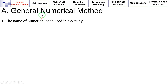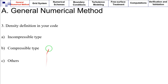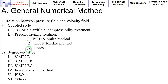General numerical method: What is the name of the numerical code used in the study? For example, Star-CCM+. What is the general classification by discretization scheme — FEM (finite element method), FDM (finite difference method), FVM (finite volume method), spectral method, vortex method, or others? You need to specify how the fluid density is treated in your code: is it incompressible, where the fluid density remains unchanged, or compressible, where the fluid density changes? How is the relation between pressure field and velocity field established — coupled style, which can be artificial compressibility, preconditioning, or Wise-Smith method, Choi and Merco method, or others?